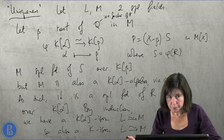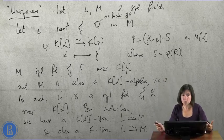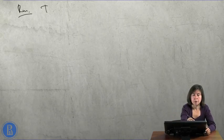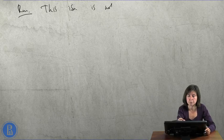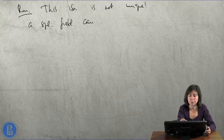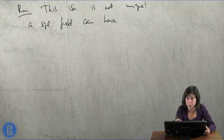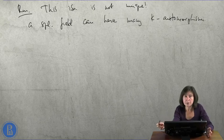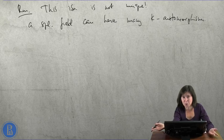Remark: the isomorphism is not unique. This isomorphism between two splitting fields is not unique. A splitting field, in particular, can have many k-automorphisms. And, in fact, the objective of Galois theory is to study this group of automorphisms.